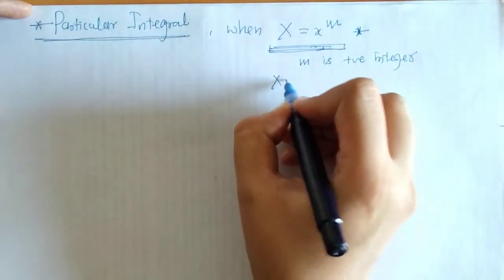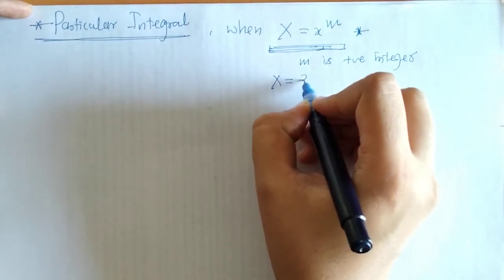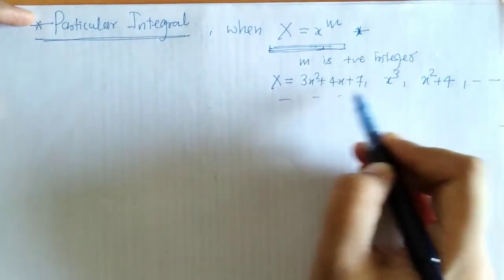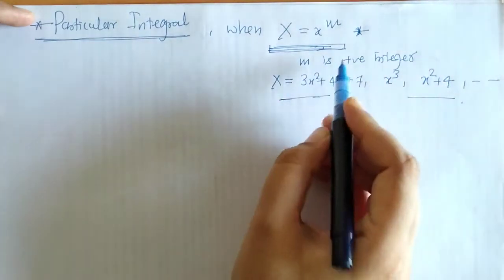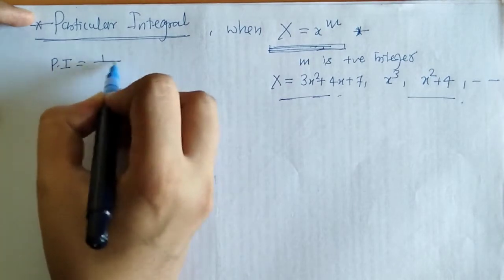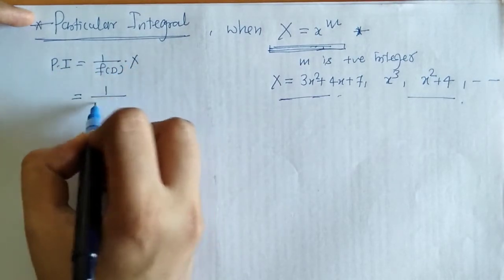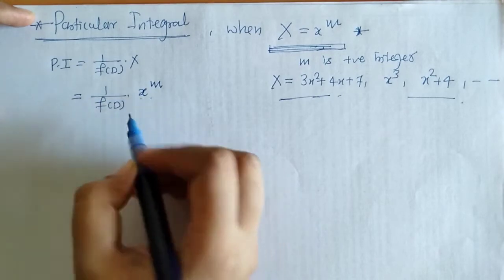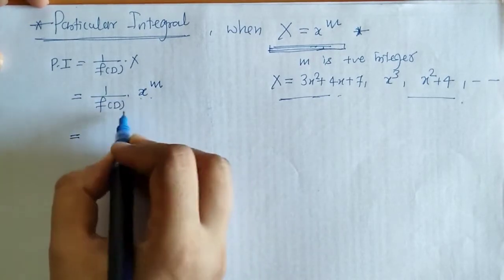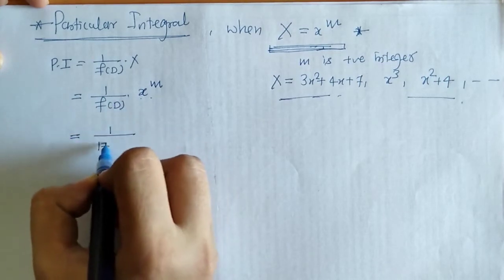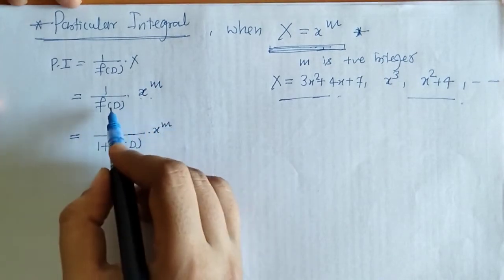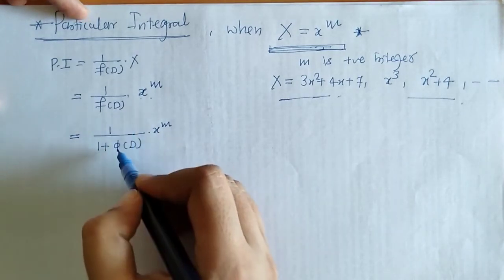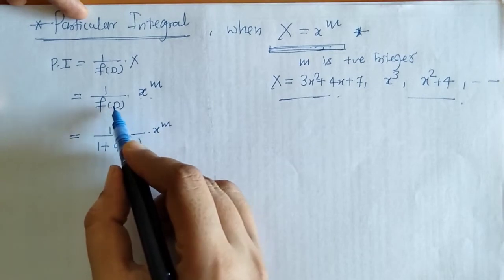That means X is a polynomial in x. Now we have to find the particular integral (PI). We have the formula for PI, and we need to operate 1 over f(D) on x raised to m. First, we have to express f(D) as 1 plus φ(D). To do this, we take out the lowest degree term from f(D).